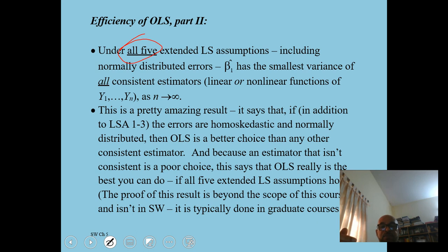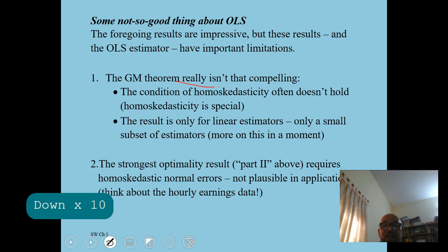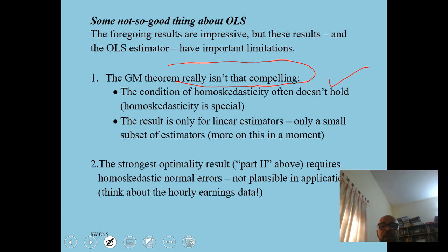Among all choices of weights wi, OLS will have the smallest variance of beta 1 hat — but only under the five assumptions including homoscedasticity and normality of u. Gauss-Markov theorem is not that compelling in practice because the homoscedasticity condition often does not hold; it is a very special-case result valid only for linear estimators. There may be biased, non-linear, or heteroscedastic-aware estimators that are more efficient than OLS, as illustrated by the hourly earnings data.